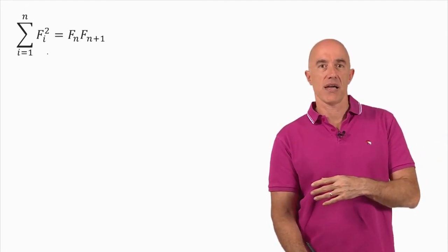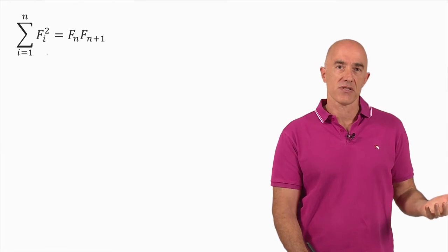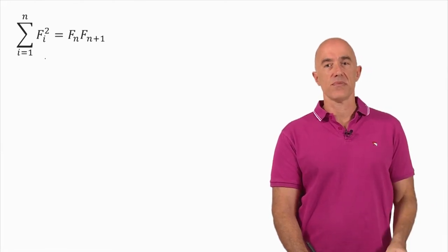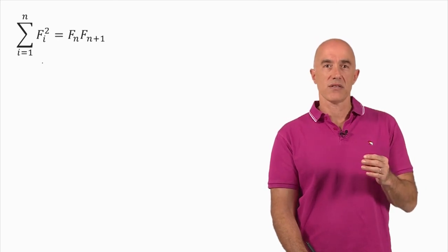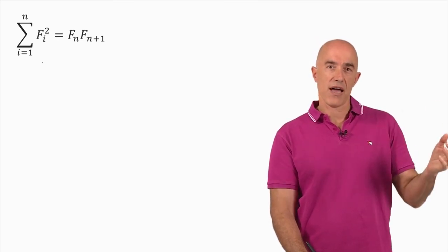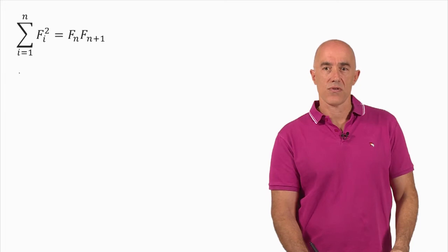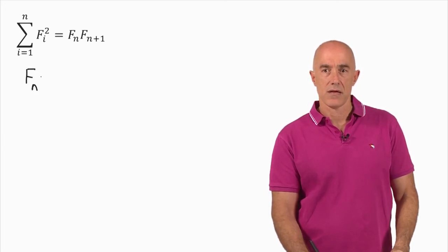So there's nothing wrong with starting with the right-hand side and then deriving the left-hand side. Turns out to be a little bit easier to do it that way. So we're going to start with the right-hand side and try to derive the left. We start with the right-hand side, so we can write down F sub n times F sub n plus 1.